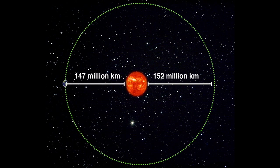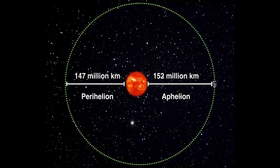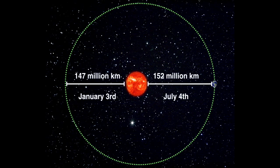One thing seasons are not: they are not caused by the changing distance between Earth and the Sun. That's a misconception. What is caused by the changing distance between the Earth and the Sun is something completely different. The Earth's orbit around the Sun is not a perfect circle. If it were a perfect circle, we'd always be the same distance from the Sun — but that's not true. There's a time in the year where we're 152 million kilometers away, and another time where we're 147 million kilometers away.